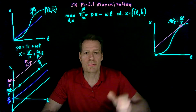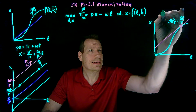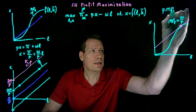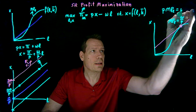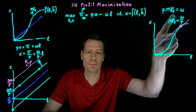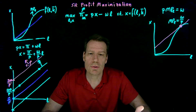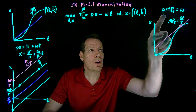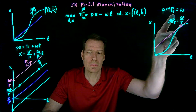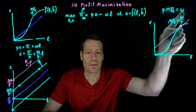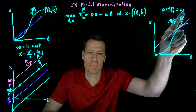We can multiply through and say that's equivalent to saying that price times marginal product of labor equals the wage. We have a word for this: the marginal revenue product of labor — the additional revenue I get from hiring one more worker. So we're going to keep hiring workers so long as the marginal revenue product of labor, the additional revenue I get from the worker, is greater than the wage I have to pay the worker.